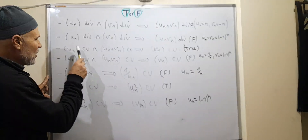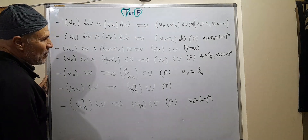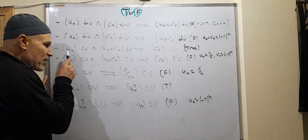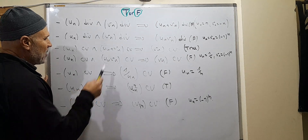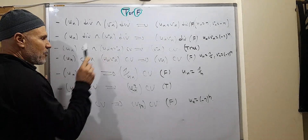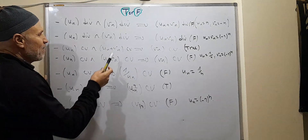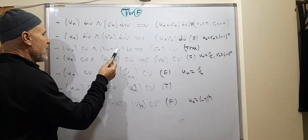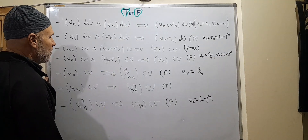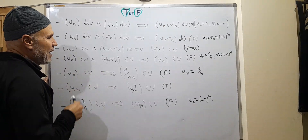If uN is convergent and uN plus vN is convergent, how about vN? This is true. Because we have two convergent sequences. If we take uN plus vN, this is convergent by the sequences property theorem. From this we deduce that vN is also convergent.